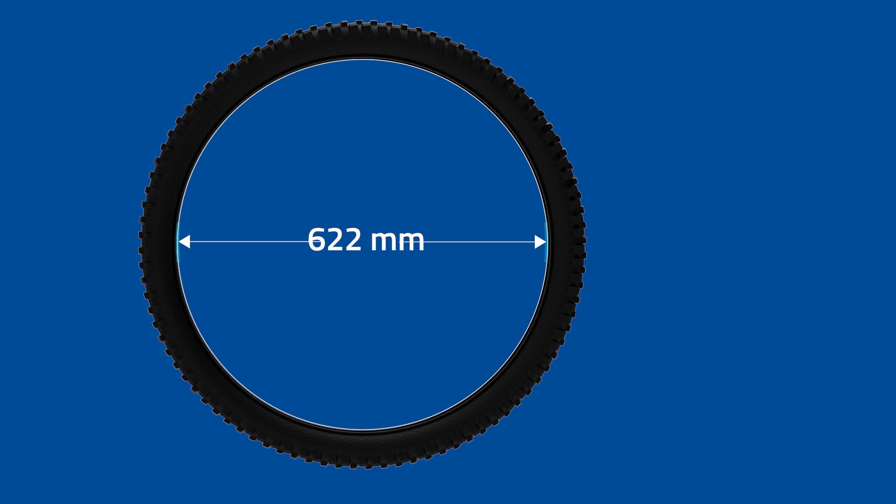In this animation, we can see that we get the 622 measurement with a tyre from the internal bead-to-bead distance. When measuring a rim, we get the 622 measurement by measuring the internal diameter of the rim's well.